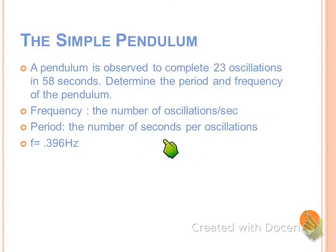The period, however, is the other way around, so seconds per oscillation, so we want to take 58 divided by 23, and we get a period equal to 2.52. Very good.